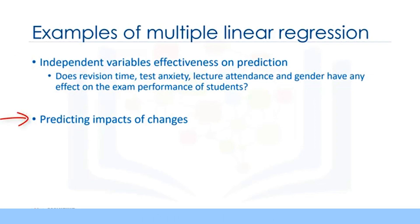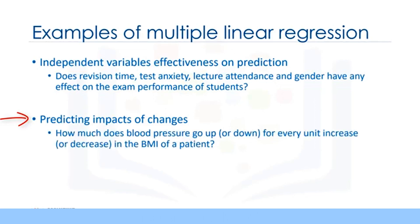Second, it can be used to predict the impact of changes. That is, to understand how the dependent variable changes when we change the independent variables. For example, if we were reviewing a person's health data, a multiple linear regression can tell you how much that person's blood pressure goes up or down for every unit increase or decrease in a patient's body mass index, holding other factors constant.